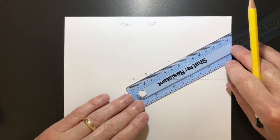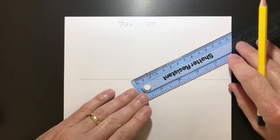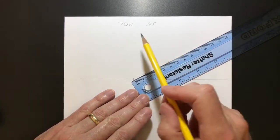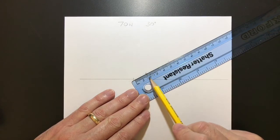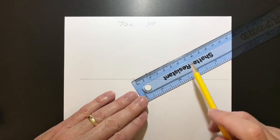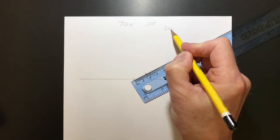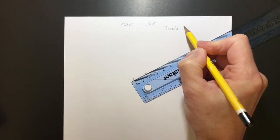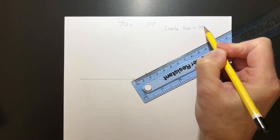If we look here, what kind of scale would be right to use? I can see quite quickly that something like 10 newtons per centimeter would give me 7 centimeters. So that's quite a good scale to use. So I'm going to communicate that by writing it up here: scale 1 centimeter equals 10 newtons.